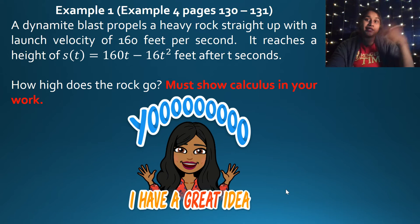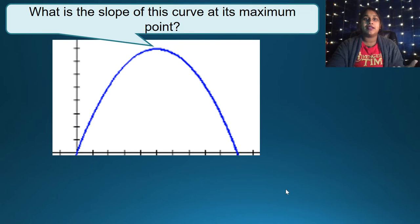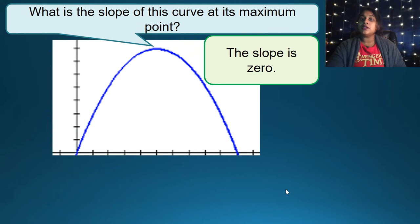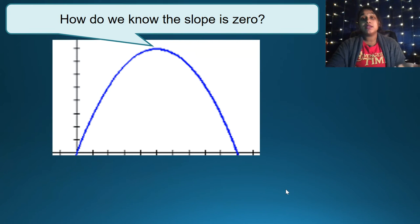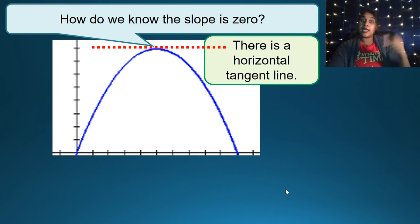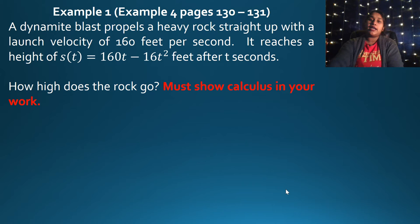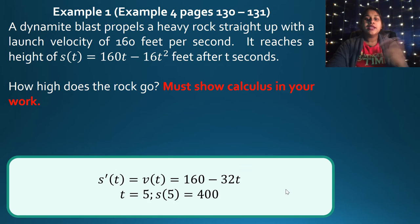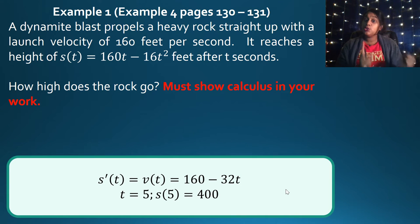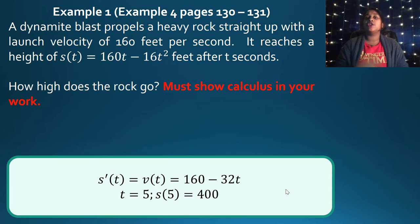To connect graphically: at that maximum point, the slope of the curve is zero because there is a horizontal tangent line. A horizontal line is constant, the derivative of a constant is zero, therefore slope is zero. We took the derivative, set it equal to zero to find the critical point, tested it, confirmed it was a true max at T equals 5, then plugged that back into the position equation to get 400 feet.